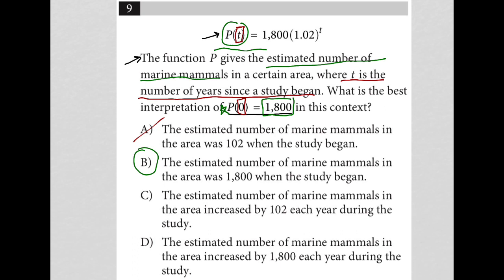Choice C, the estimated number of marine mammals in the area increased by 102 each year. All right. So again, this question literally asks what P of 0 equals 1800 means. So 102 is not even a part of that conversation. So that's completely out.